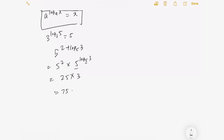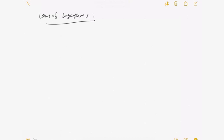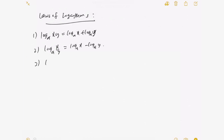That's a quick way to simplify index equations. Now let's move on to the laws of logarithm. In your textbook they list only three, but I'd like to show you a fourth one. The first law: log_a(xy) = log_a x + log_a y — the multiplication rule. Second: log_a(x/y) = log_a x − log_a y — the division rule. Third: log_a(x^m) = m·log_a x — the power rule.